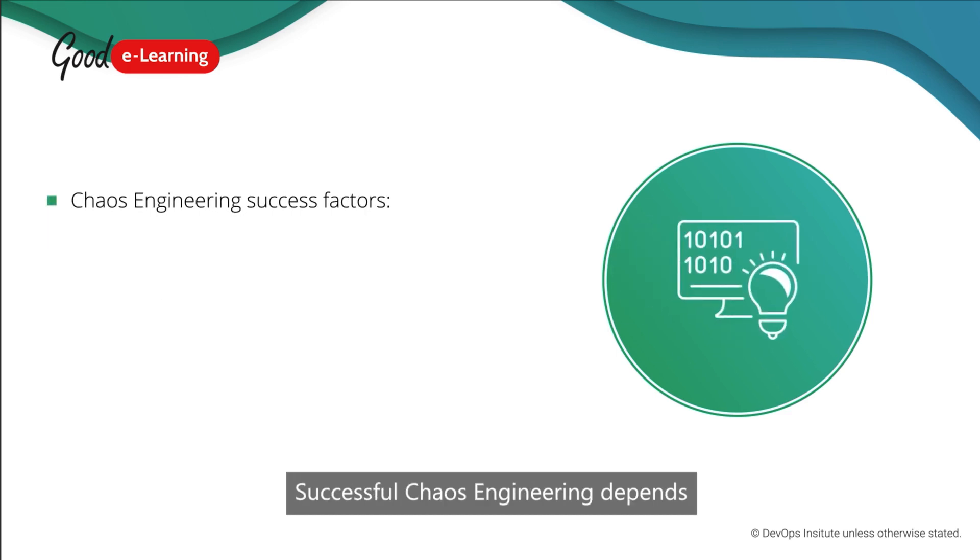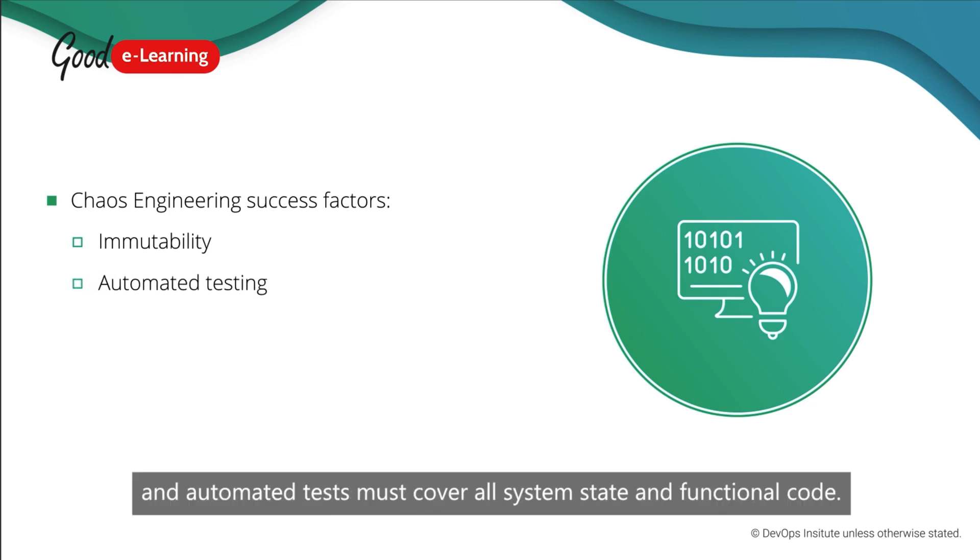Successful chaos engineering depends on lots of concepts we've discussed in previous modules, particularly automated recovery. Immutable infrastructure as code is necessary to automate recovery and automated tests must cover all system state and functional code.